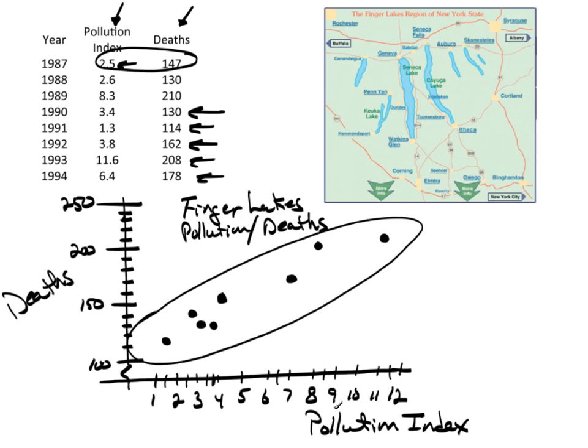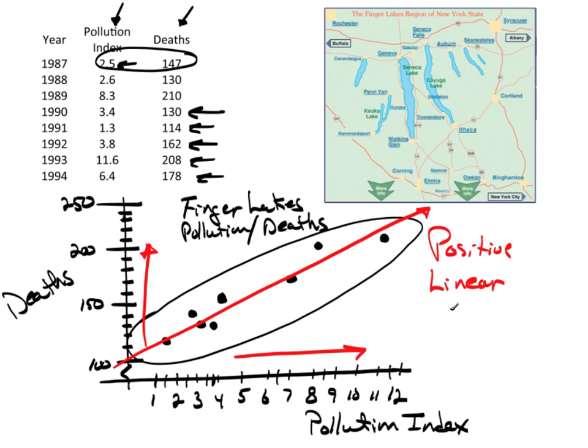What we're seeing here is that as the pollution index increases, in general, not always, but in general, the number of deaths also increase. That gives us what we think of as a positive trend. And this does appear to be a linear trend.